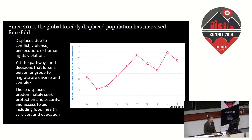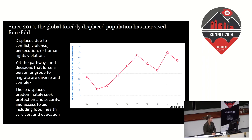According to one of the UNHCR reports, in 2010 the number of people newly displaced per day was 10, and in 2018 that number is close to 40.